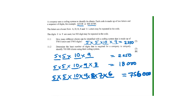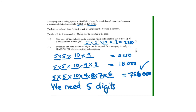Since 756,000 is at least 700,000, five digits satisfies the requirement. The question asks for the least number of digits required, and the answer is five digits. God bless.